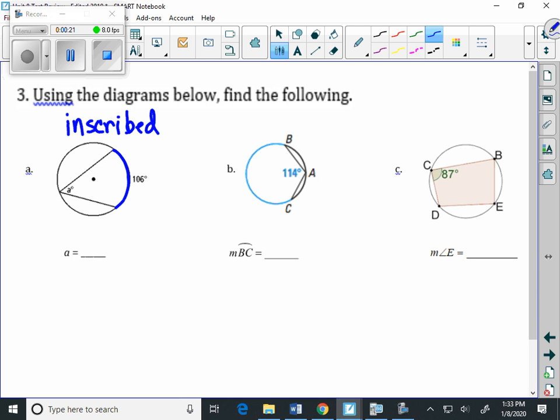Here's the intercepted arc. We take 106, we divide it by 2, we get 53.